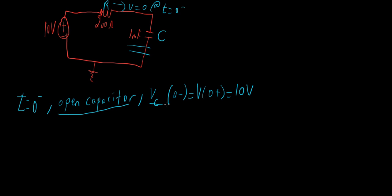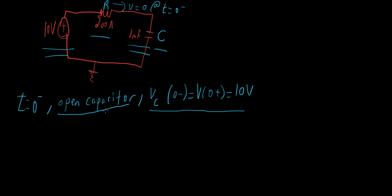We know the voltage across the capacitor. Now that we know this, we have to basically get rid of the voltage source, because the transient response really is how the circuit responds to the energy stored in the capacitor. So we're focusing on the resistor and capacitor — we need to get rid of this voltage source. We're left with the simple resistor and capacitor circuit, with the capacitor having 10 volts at T equals 0 plus.